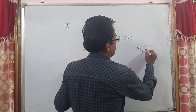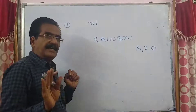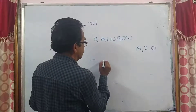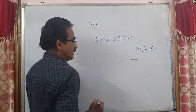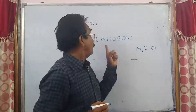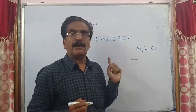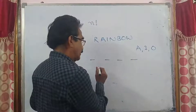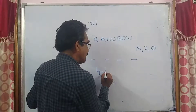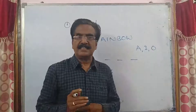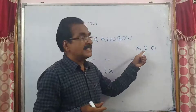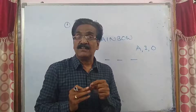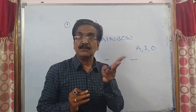There are 4 consonants: R, N, B, W. Let us arrange the consonants first. These four consonants can be arranged in four factorial ways. Now we have to arrange the three vowels with the condition that no two vowels come together. After arranging the four consonants, we have five available positions (gaps) — before, between, and after the consonants — where vowels can be placed so no two vowels are adjacent.